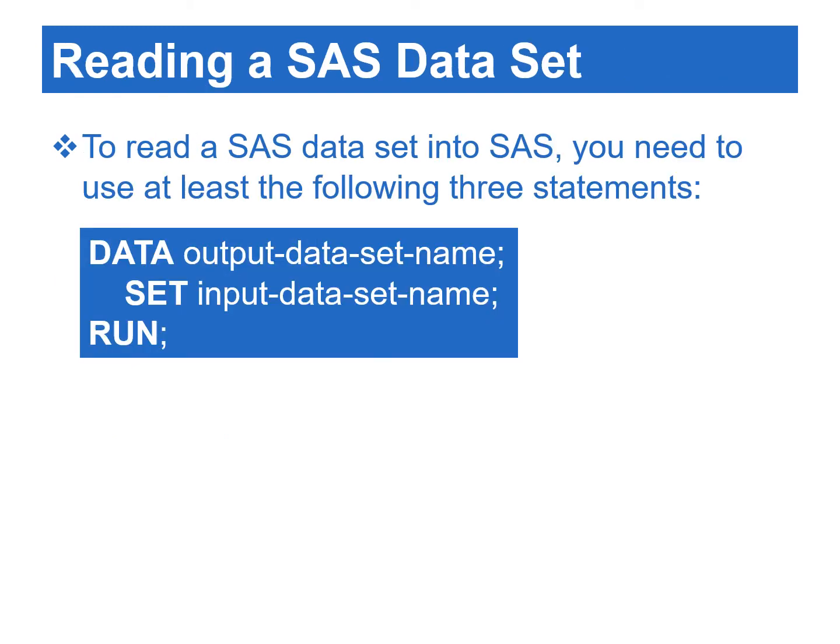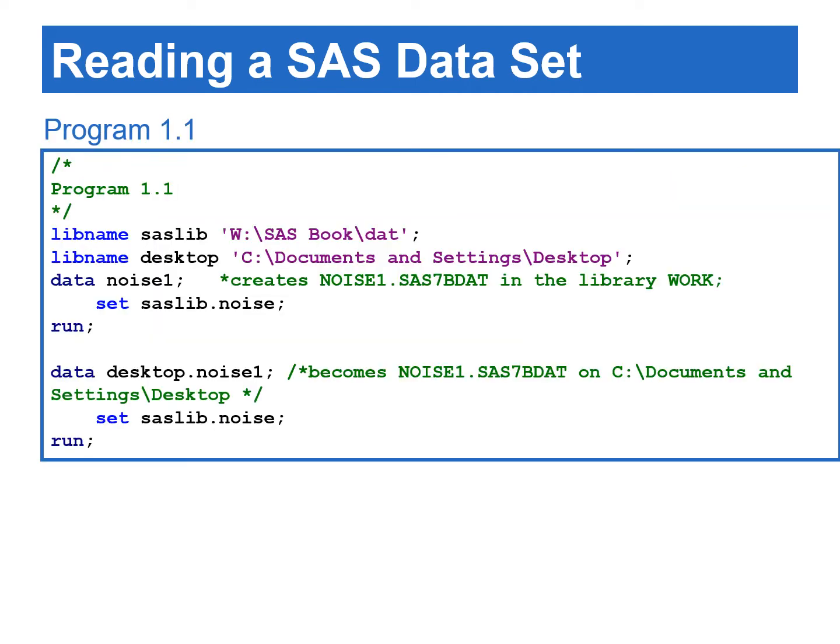To read a SAS data set, we need to use at least three statements. In the data statement, output data set name is the name of the data set that we are creating. The input data set name in the set statement is the name of the data set that we are reading. The run statement is used to execute the previously entered statements. This program creates two SAS data sets by reading the noise data set from the SASlib library. The first data step creates a temporary data set, noise1, stored in the library work. The second data step creates a permanent data set, noise1, stored in the desktop library. Notice that both data sets being created have the same data set names but are stored in different libraries.